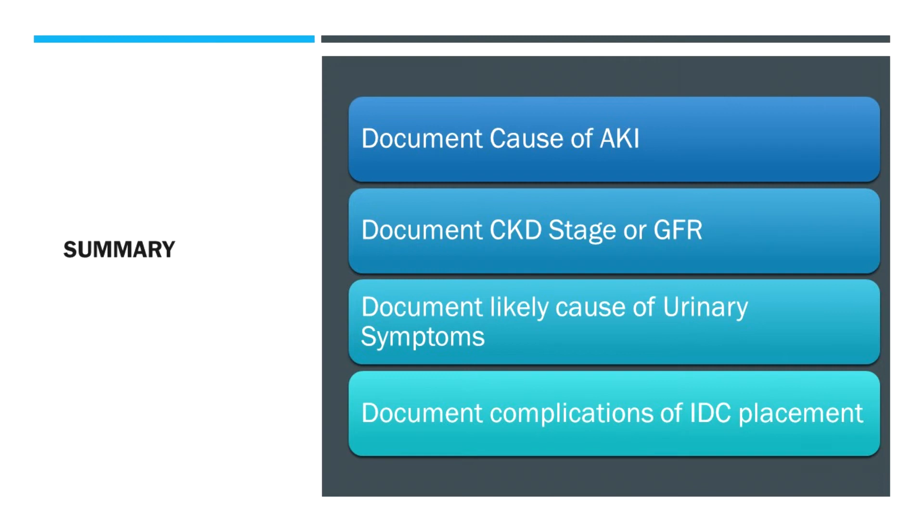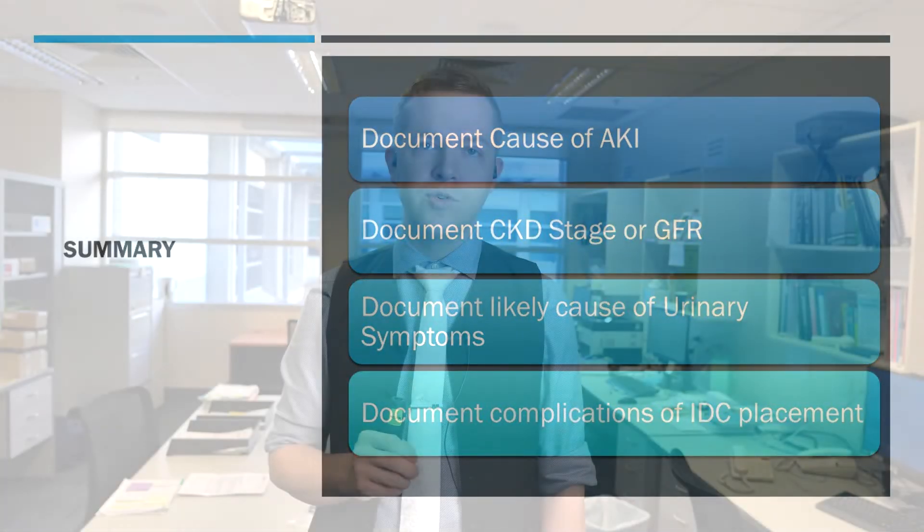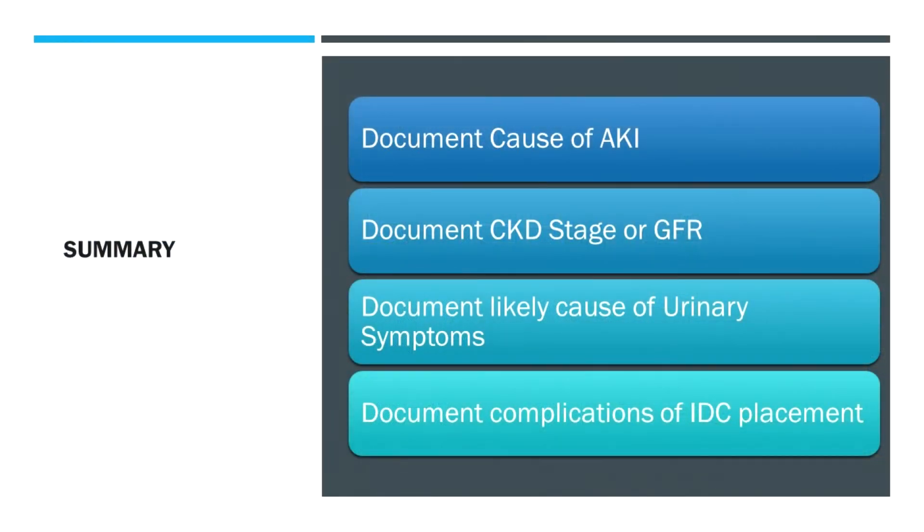So really simply, here's a quick overview. If you've got an AKI, please document a cause — not just a classification of pre-renal or post-renal, but an actual specific cause, and maybe there's more than one. If they have CKD, please document a stage or a GFR, particularly important in stage 4 and 5. If you have someone with urinary symptoms — whether dysuria, hematuria, nocturia, or incontinence — documenting the detail of why this is occurring or the subtype of incontinence will add complexity significantly in most DRGs. And lastly, if there are complications related to IDCs, documenting these in detail will allow appropriate coding and then appropriate funding to reflect that.